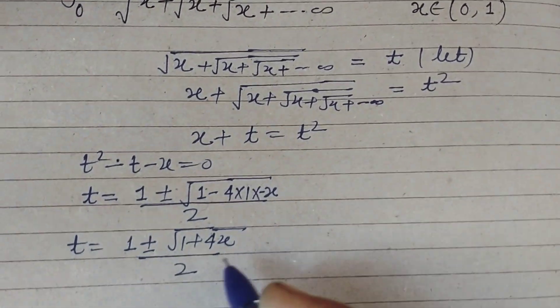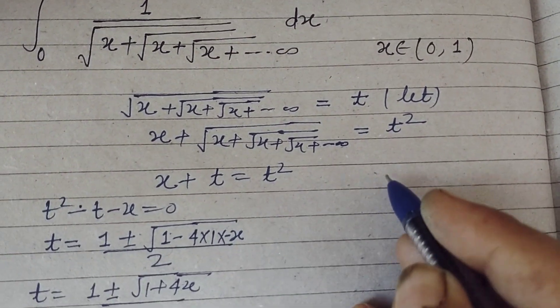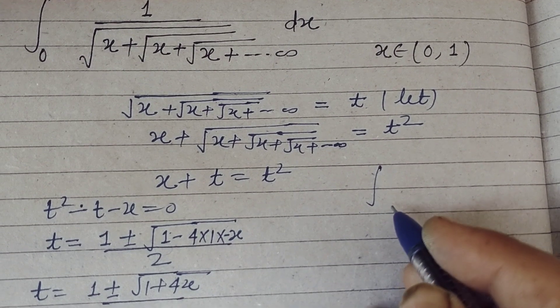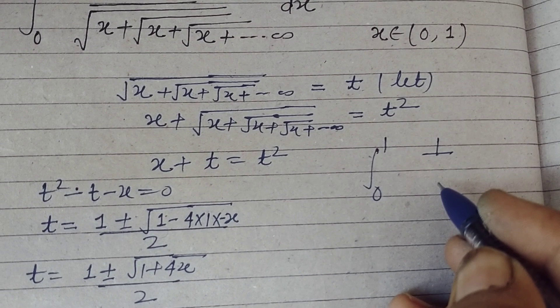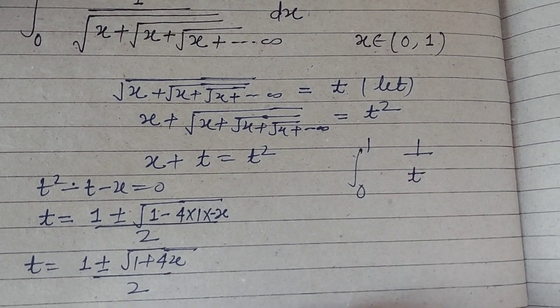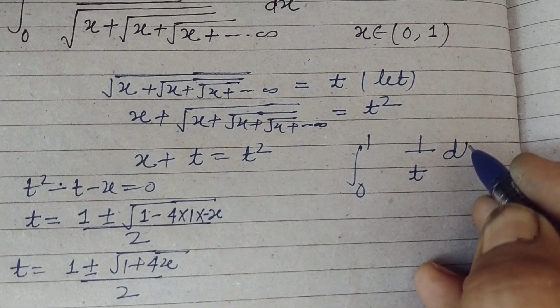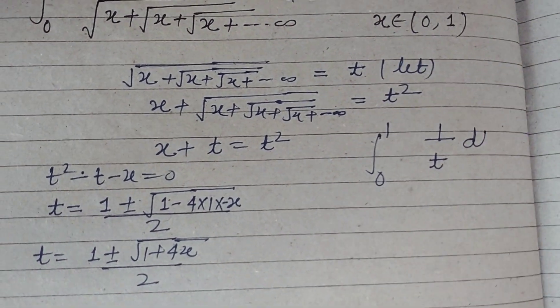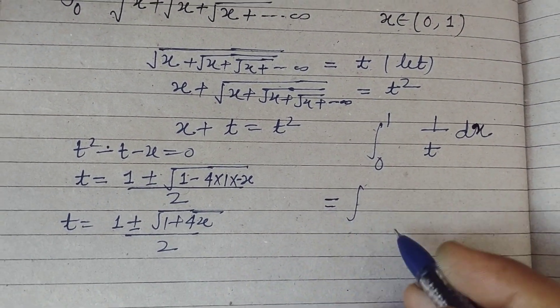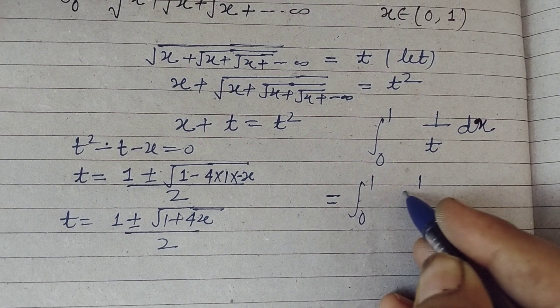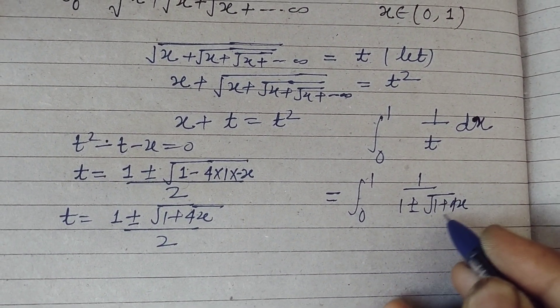Since we have taken root of x equal to t, we write it as here zero to one, one upon this is t, dt. So dx, now we put the value of t. This is one upon one plus minus root of one plus 4x upon two, dx.